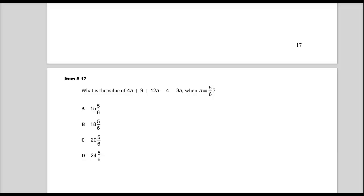Welcome. This is item number 17 from the released spring 2014 test items for Tennessee TCAP 7th grade math. So the question says, what is the value of 4a plus 9 plus 12a minus 4 minus 3a when a is 5 over 6?